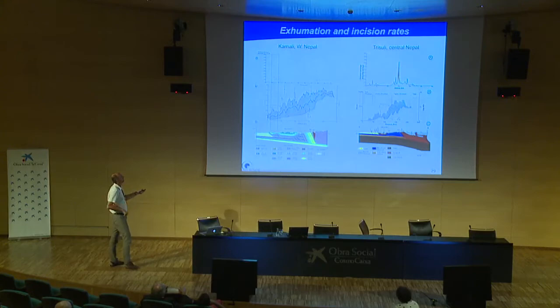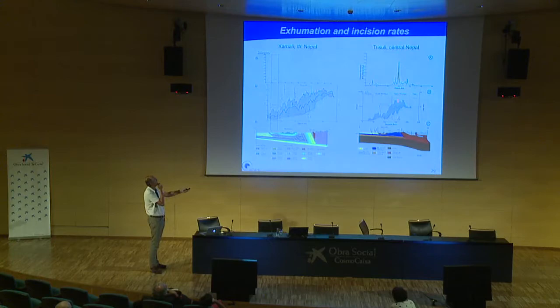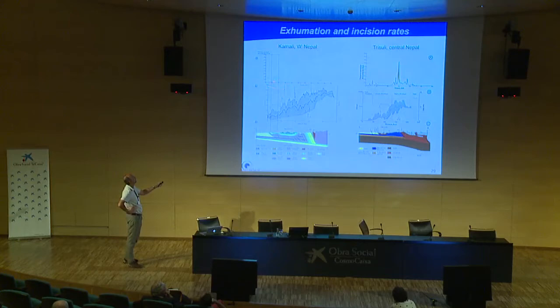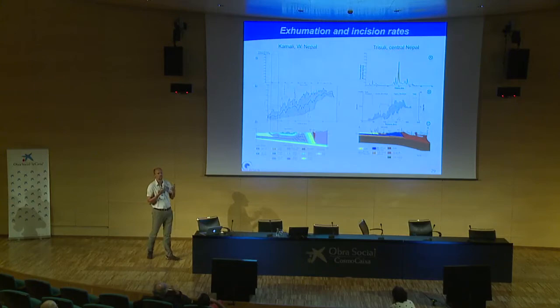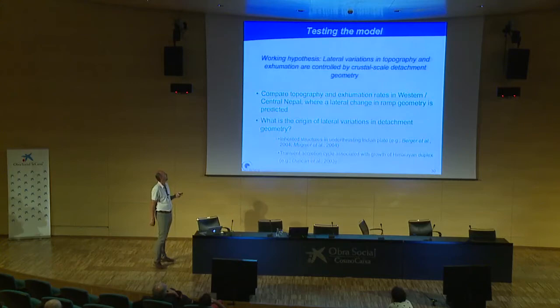Comparing both cross-sections — geological cross-sections, topography, apatite fission track ages, and unit stream power — we see a very strong peak in unit stream power in the Trisuli associated with very young fission track ages indicating high exhumation rates exactly at the topographic transition zone. In western Nepal, there is a much wider, lower distribution of stream power with generally older ages, except right at the Main Central Thrust. At first order, this seems to confirm the hypothesis that lateral variations are controlled by crustal-scale detachment geometry.